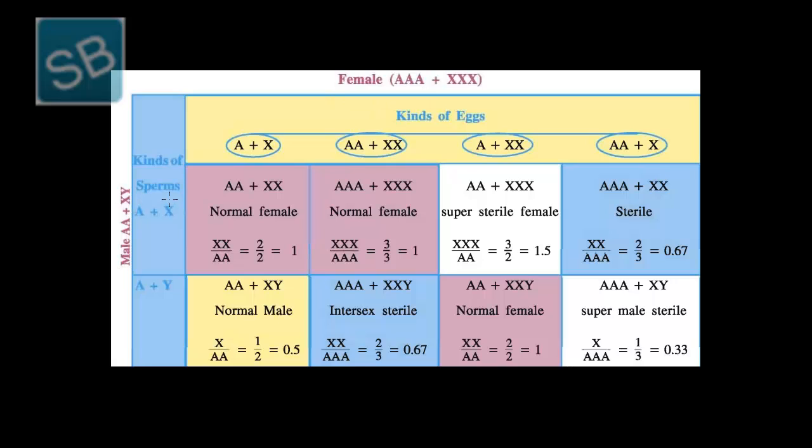As it can be seen from this figure, the sperms that were produced were only of single type, that is A plus X. And the female produced four types of eggs: first A plus X, then double A plus double X, then A plus double X and double A plus X.